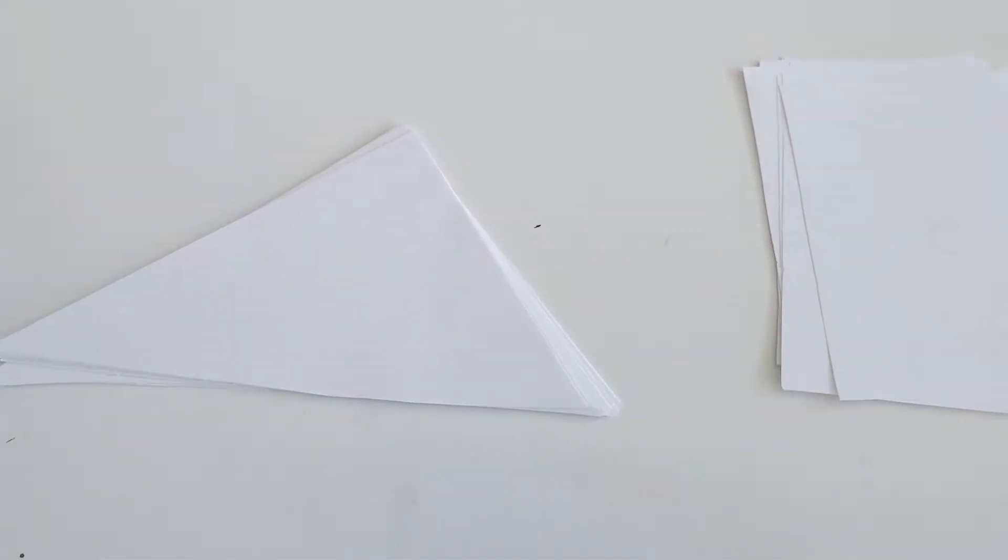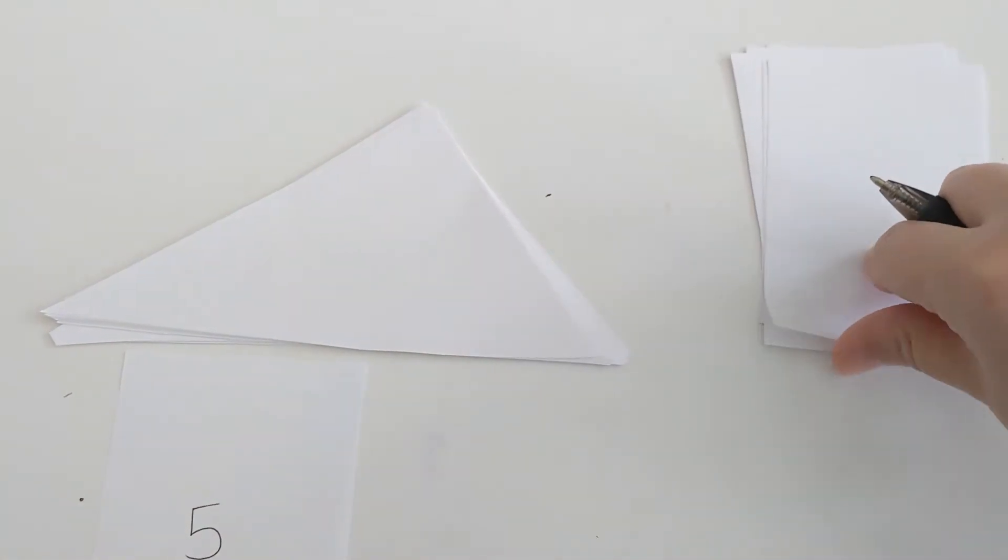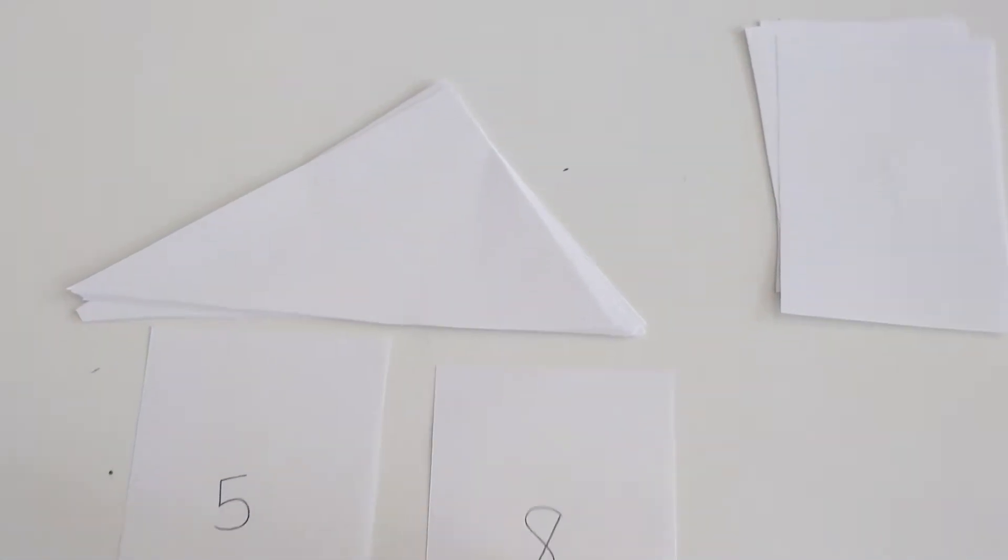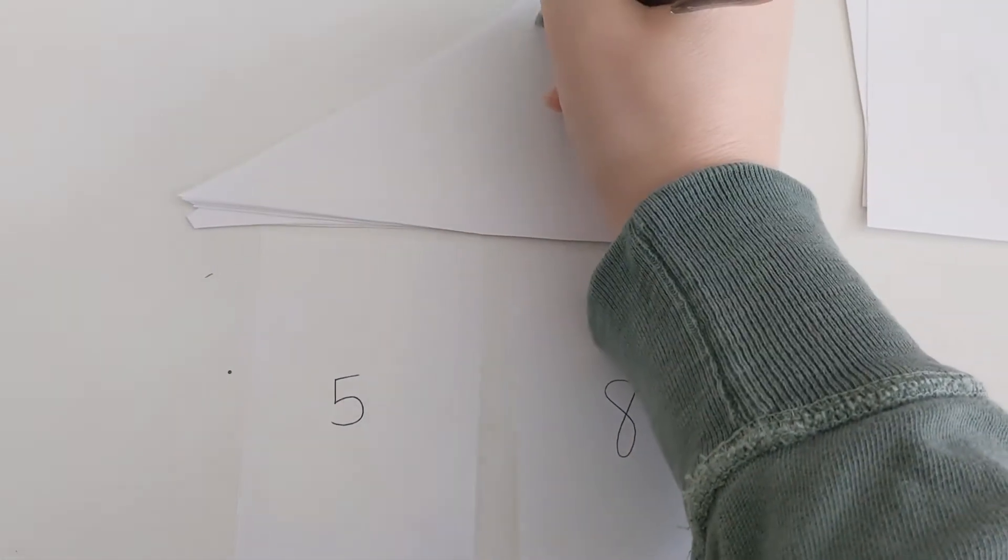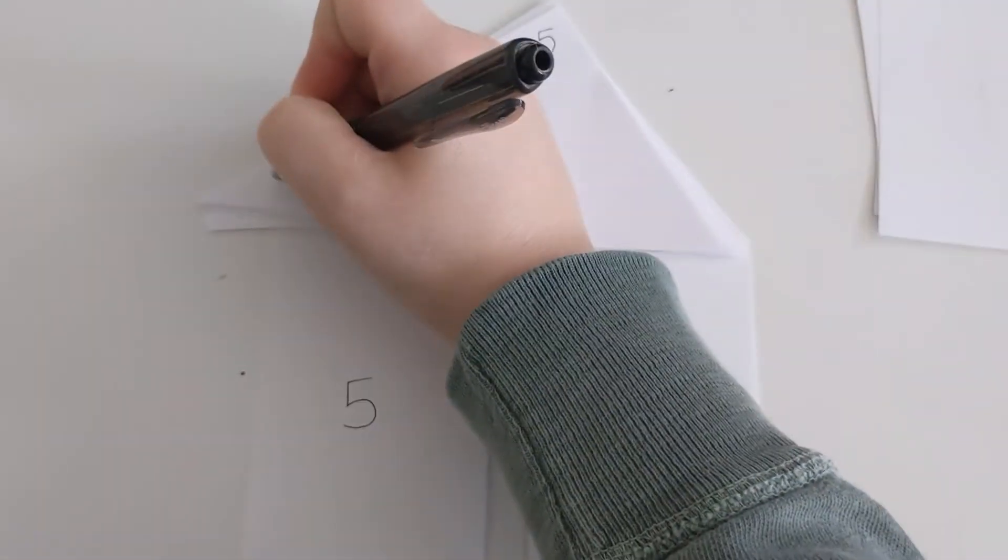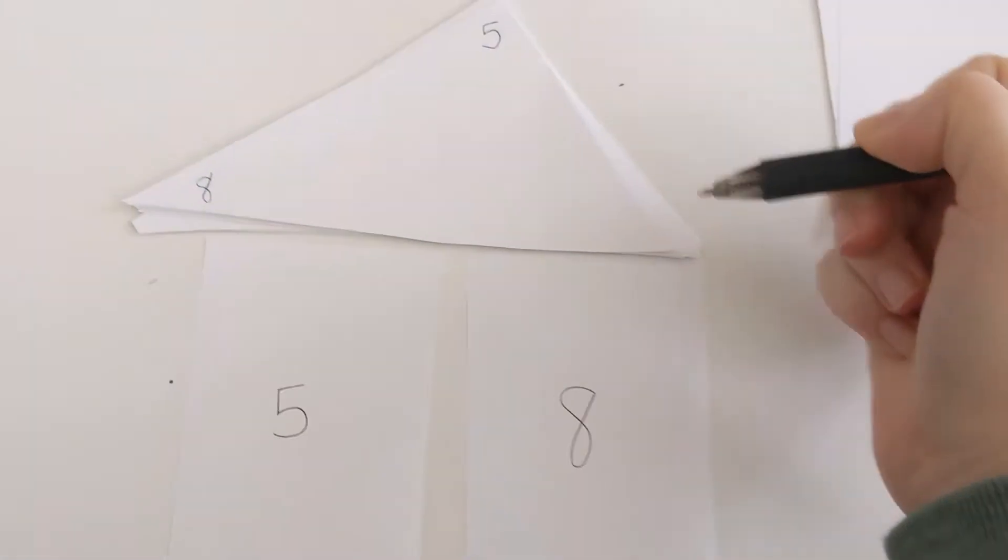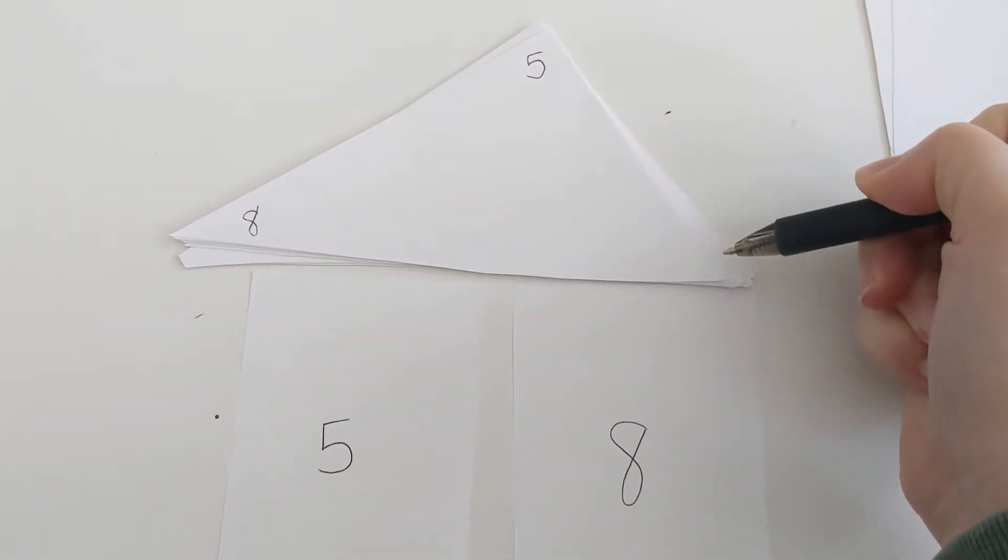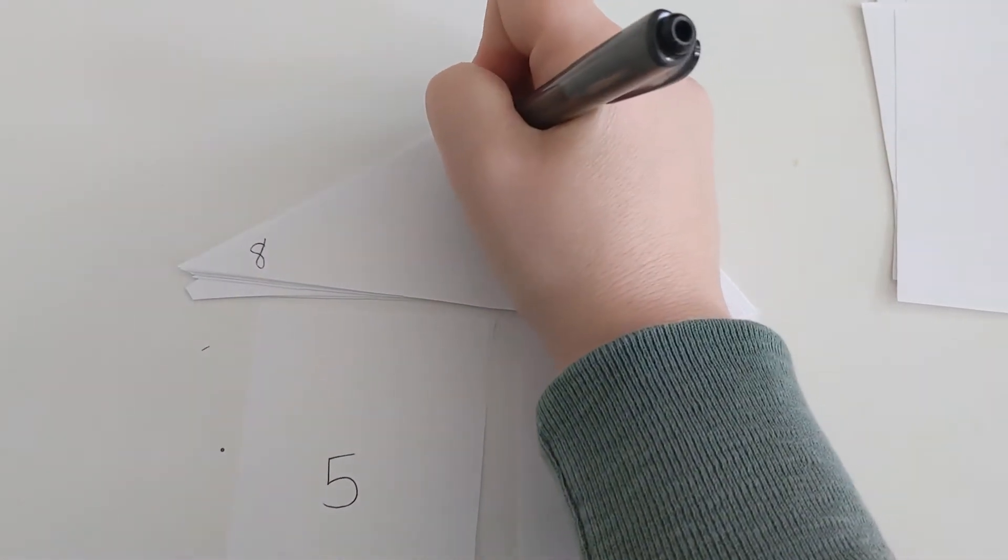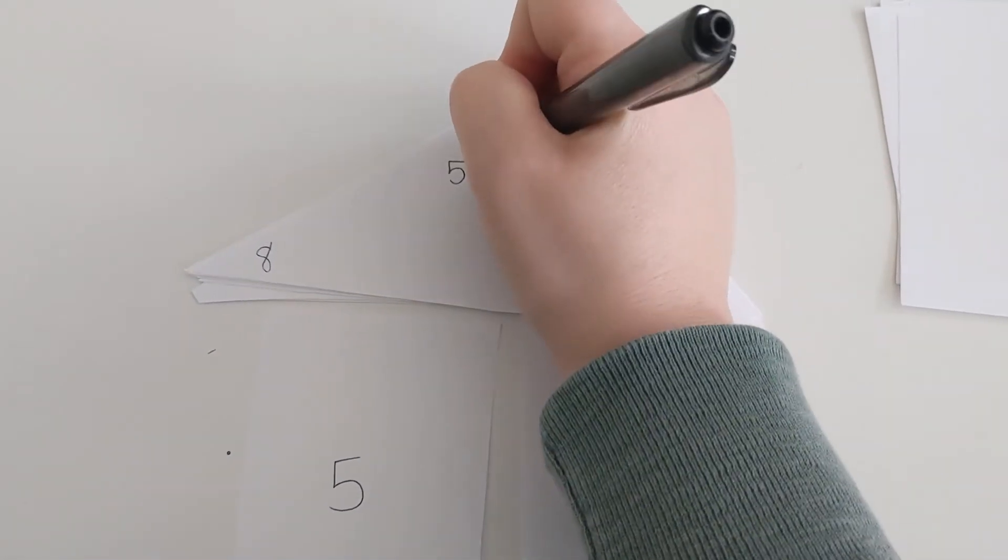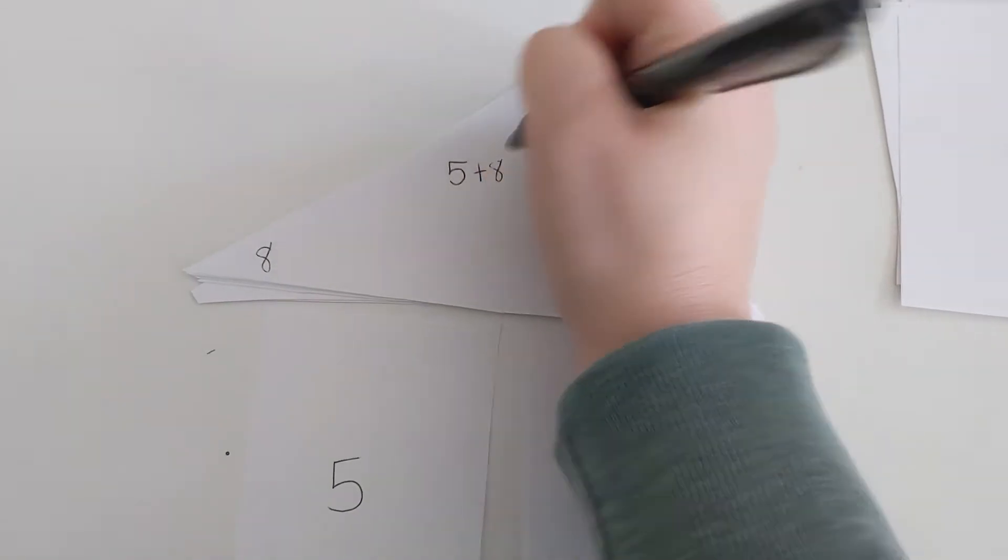So the first thing you're going to do is you're going to select two cards. So I have a five and I have an eight. So this is what I need to do. Somewhere in one of the corners, I'm going to put my five and on another corner, I'm going to put my eight. Now I have an empty corner that I need to figure out the answer to. So this is what I will do. I will do two addition problems. So five plus eight equals, and I'm only using these two numbers.